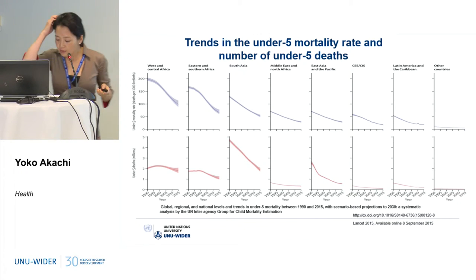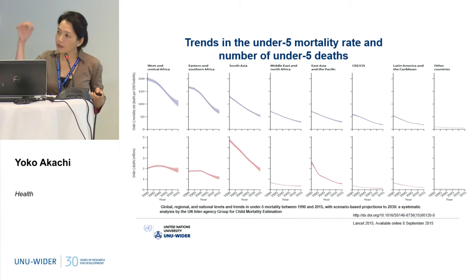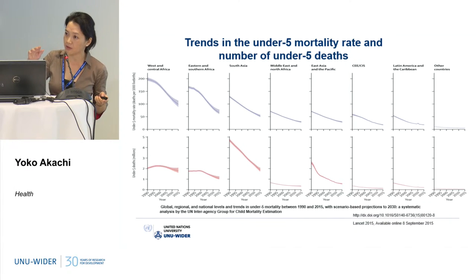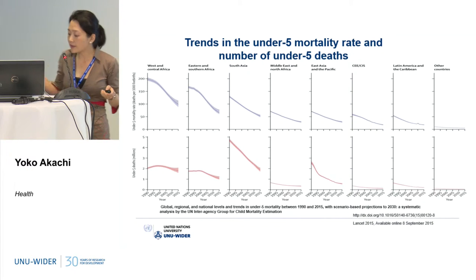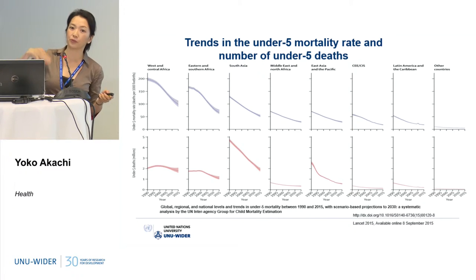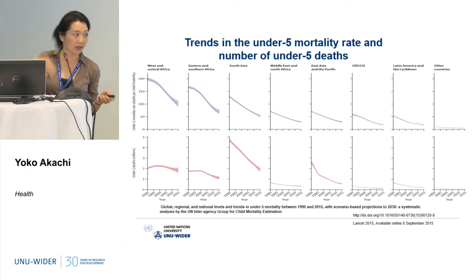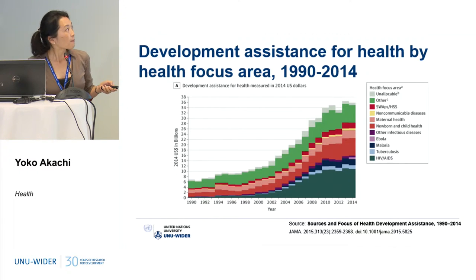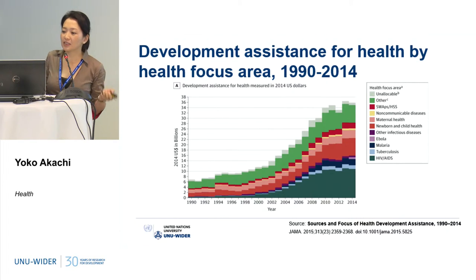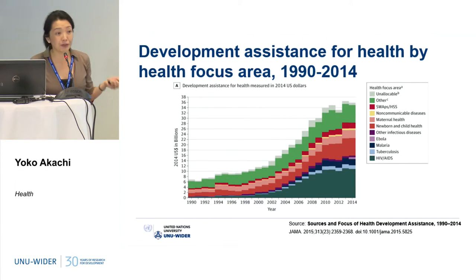In sub-Saharan Africa, the rate of decline of child mortality was about 0.8% in the 1990s, and now the rate of decline is 4.2%, so it's really declining fast. We don't really know the full answer, but we do know that development assistance for health has really gone up in the same period.